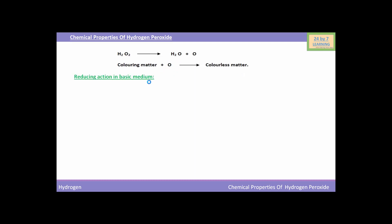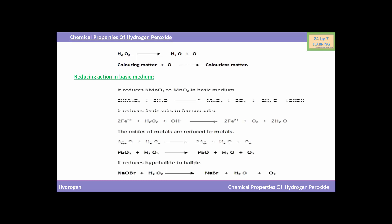Now come to the reducing action of H₂O₂ in basic medium. H₂O₂ reduces KMnO₄ to MnO₂ in basic medium. You can see the reaction below. KMnO₄ (potassium permanganate) when reacted with H₂O₂ will be reduced to MnO₂. In basic medium, H₂O₂ also reduces ferric salts to ferrous salts.